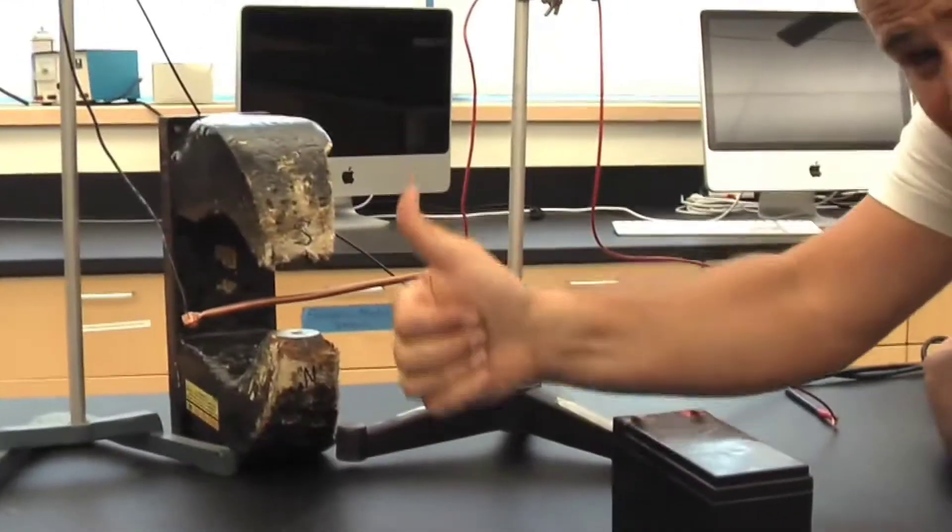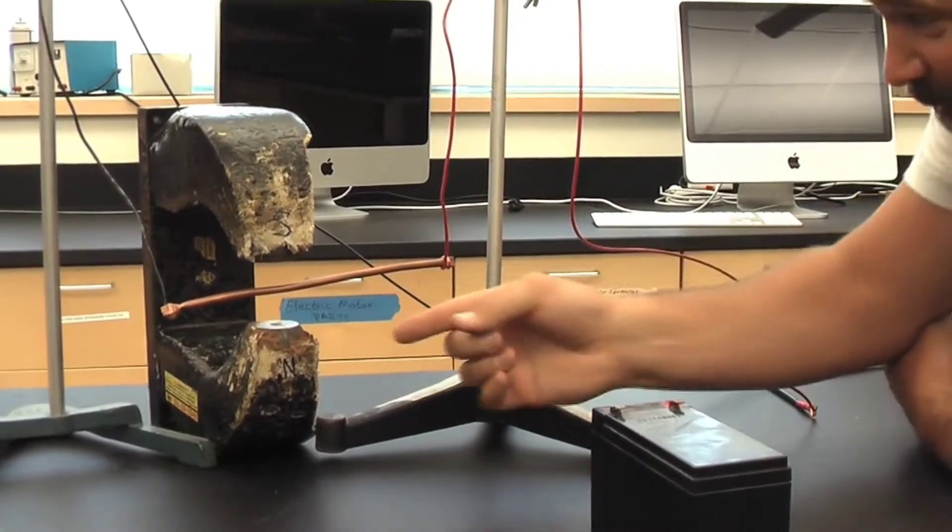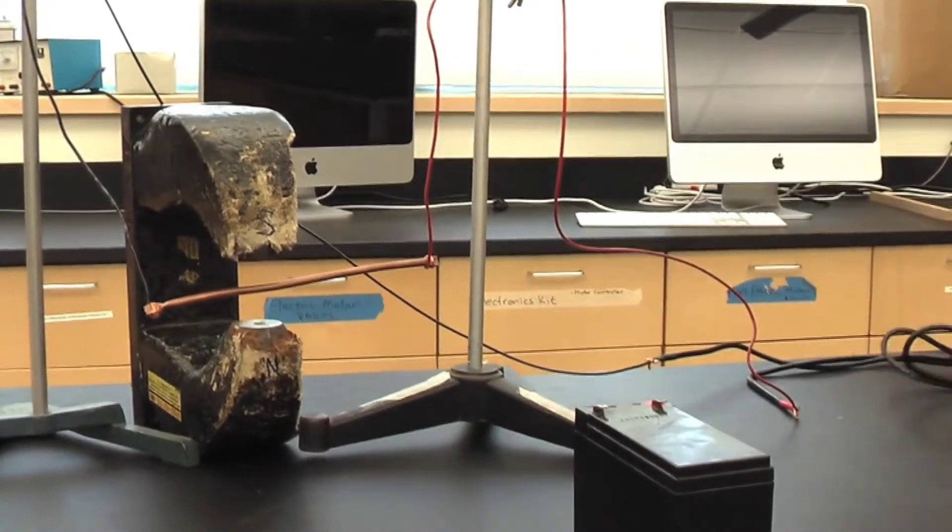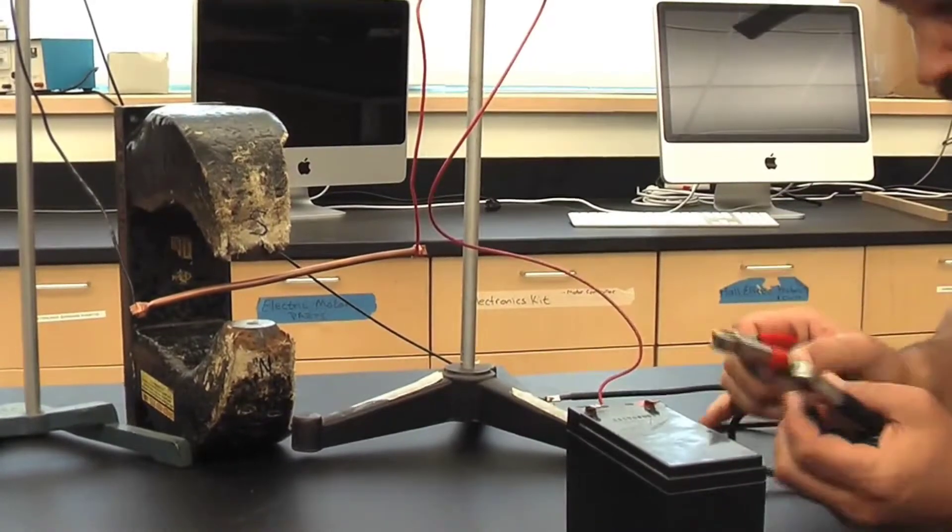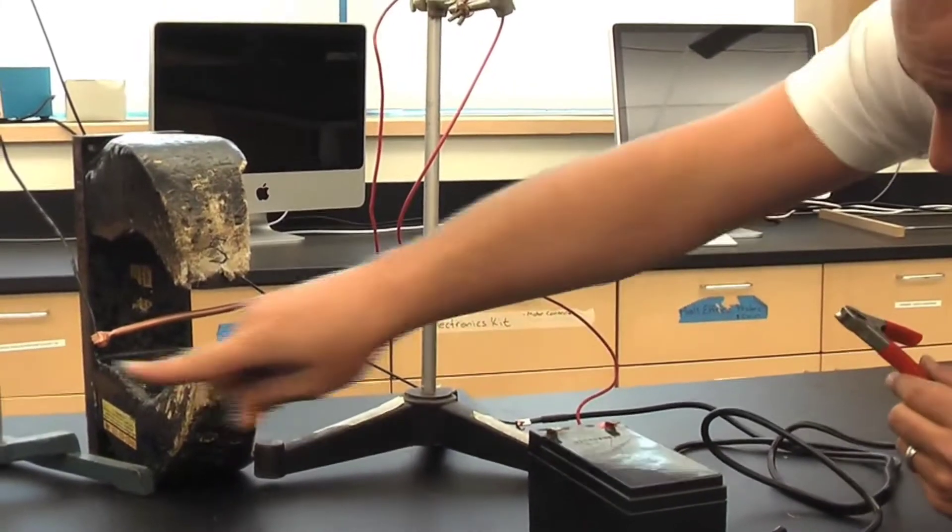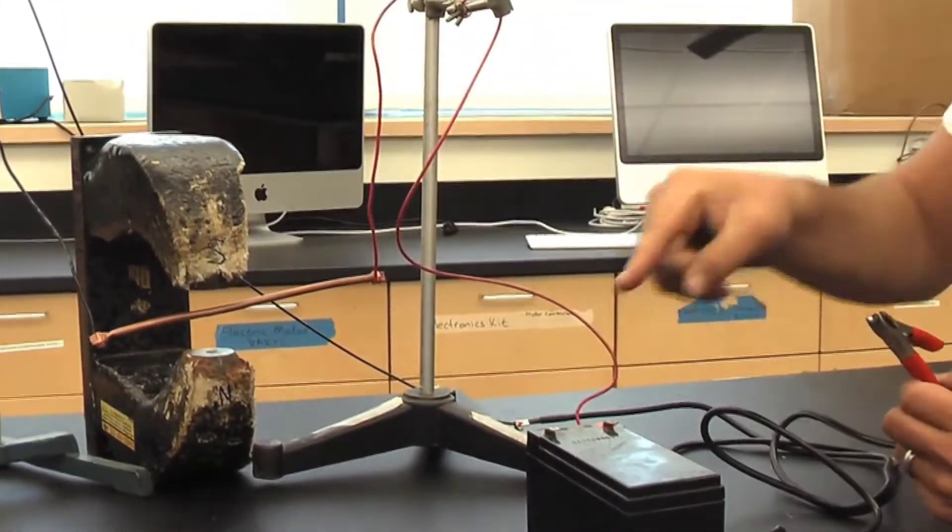So the field is pointing up and then I have a big copper tube which is connected to the wires here and there. When I connect these here, electricity will flow through this guy, through the red, through the copper tube, and then up through ground and then back home.